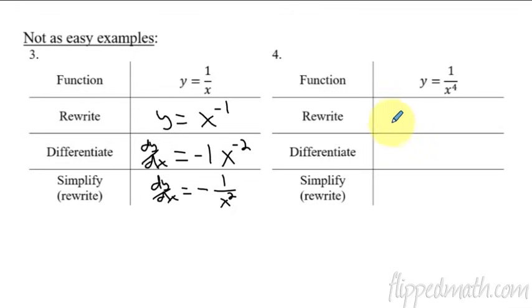Alright, so this one, let's rewrite it. So again we're not taking the derivative yet, I'm just going to rewrite it so it's a little easier to focus in on taking the derivative. So now I'll say, this time I'll use y prime. So y prime is going to be, the negative 4 comes down to the front and is the coefficient, and then we subtract 1, so it's now x to the negative 5th. And our final answer then could be negative 4 over x to the 5th.